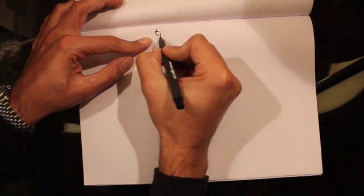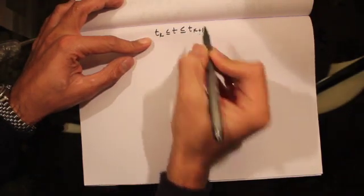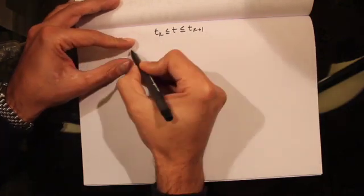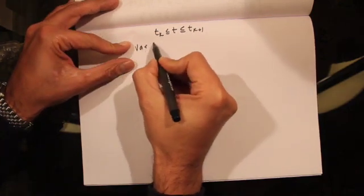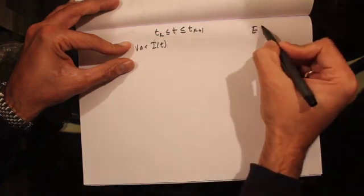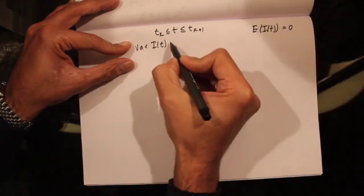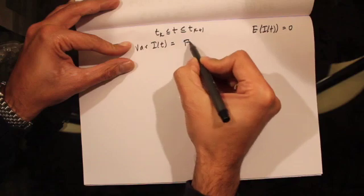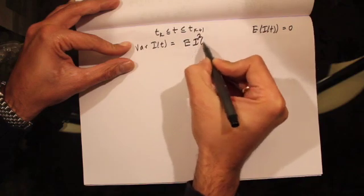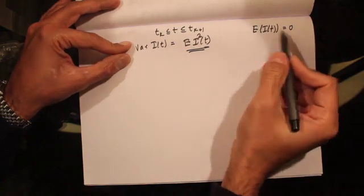Let's compute the variance of Itô's integral. Assume t_k ≤ t ≤ t_{k+1}. We want to compute the variance of Itô's integral. I just showed you that the expected value of Itô's integral is equal to 0, hence the variance formula becomes E[I(t)²], because the expected value of Itô's integral is equal to 0.